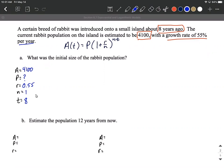So in filling into our formula, I think we can say 4100 equals P, we don't know what that is, times 1 plus 0.55 divided by 1 raised to the 1 times 8 power.